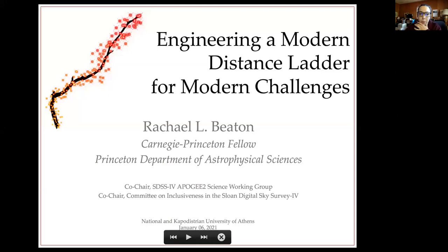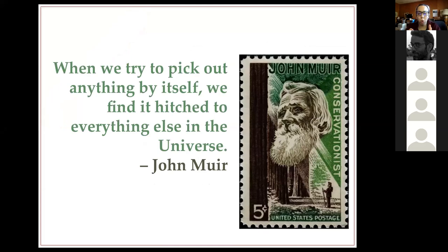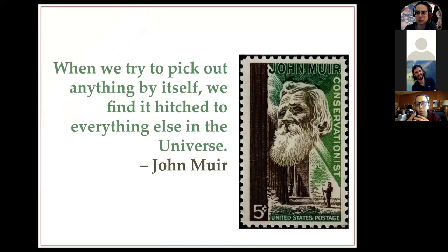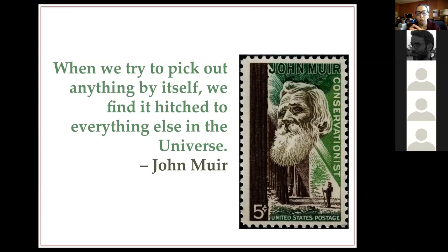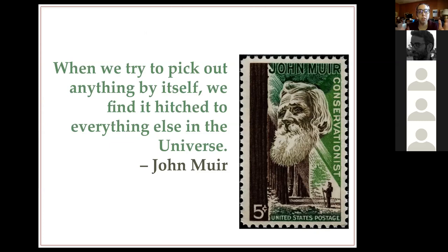Whenever I give this talk on the Hubble constant, I like to start with this quote from John Muir — a conservationist who founded the Sierra Club. He says: 'When we try to pick out anything by itself, we find it hitched to everything else in the universe.' He's talking about conservation — when we try to save the redwoods we can't just think about the redwoods, we have to think about the entire ecosystem. That's pretty much what it's like to study the Hubble constant.